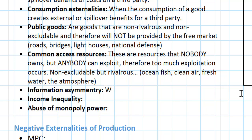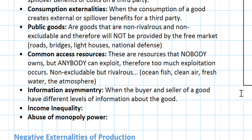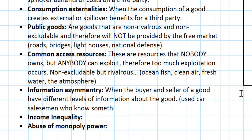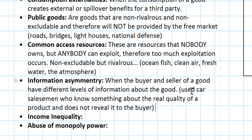Information asymmetry is when the buyer and seller of a good have different levels of information about the good. If the seller knows something about the good that the buyer does not, then the price and quantity of that good produced and consumed will not be efficient. A classic example is used car salesmen who know something about the real quality — or lack of quality — of a product and do not reveal it to the buyer. In such a situation buyers are tempted to pay more for a good and consume more of that good than they probably should.